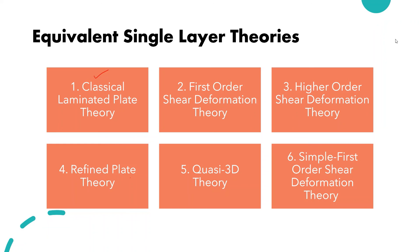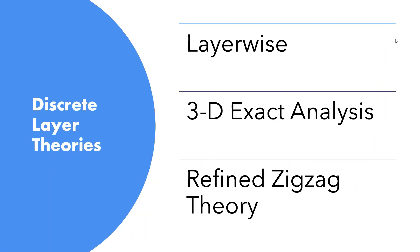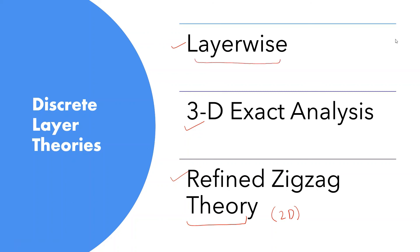In the discrete layer theories we have the layer-wise theory, three-dimensional exact analysis, and the refined zigzag theory, where the analysis is performed layer by layer or lamina by lamina. The refined zigzag theory is generally a two-dimensional theory and can be seen as a mix of equivalent single layer and discrete layer theories. Layer-wise theories and 3D exact analysis are both lamina-by-lamina approaches. Thank you for this lecture.